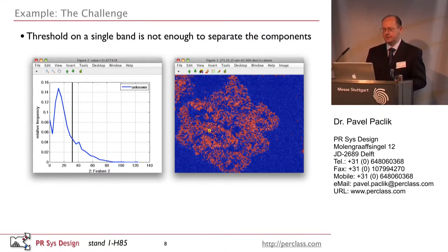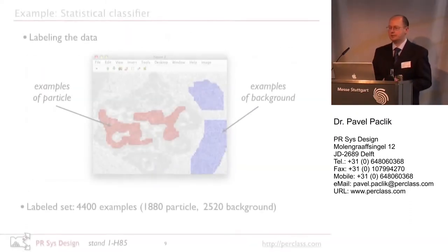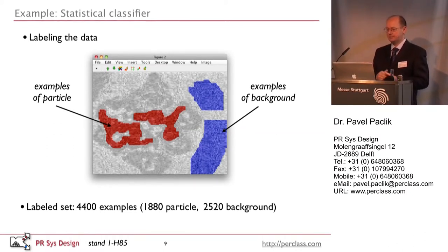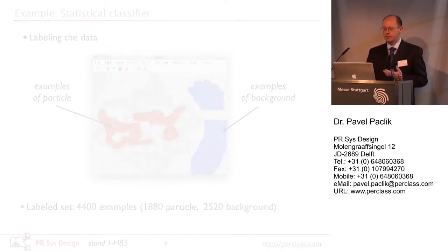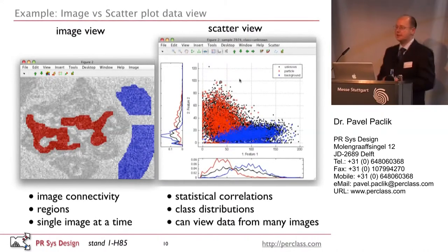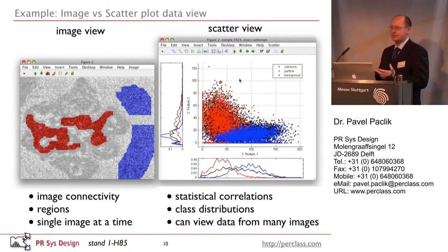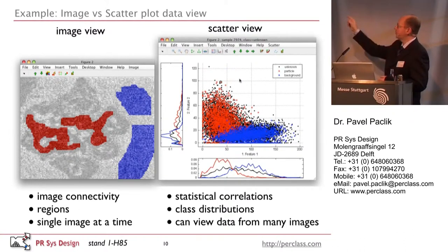In the machine learning approach, we show examples of what we mean by the particle — the labeled red part — and the background. I prepared a dataset from a single image with about 4,400 labeled pixels from these two categories. The same data can be viewed as a scatterplot, which is much more useful for machine learning. Even though people sometimes shy away from scatterplots, it's very important to understand what statistical learning is actually doing.